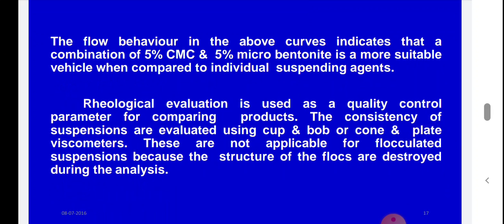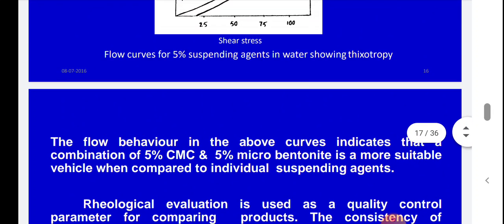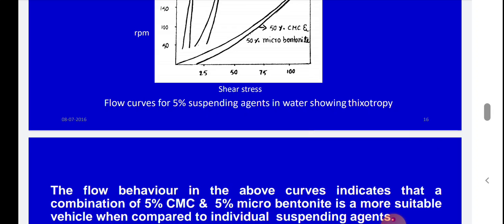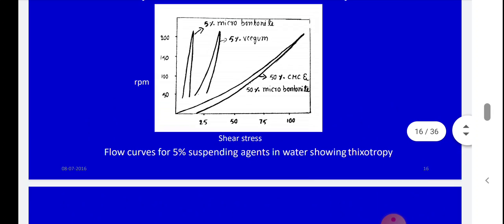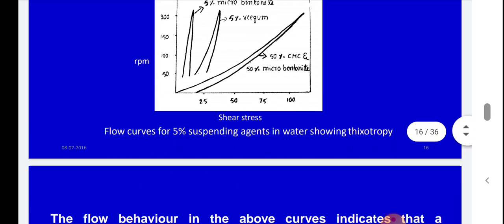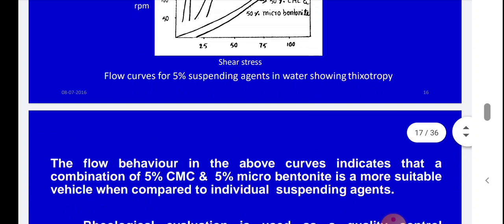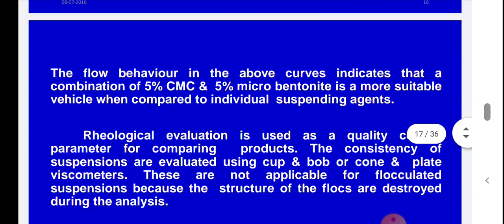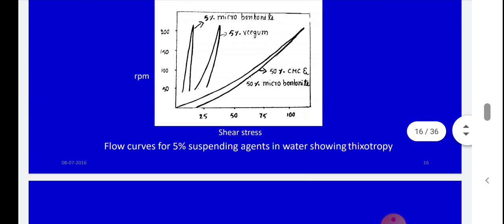The flow behavior in the curves indicates that the combination of 5% CMC and 5% microbentonite is the more suitable vehicle when compared to the individual suspending agents used alone.